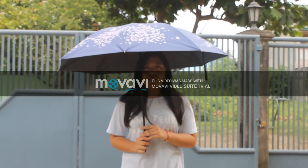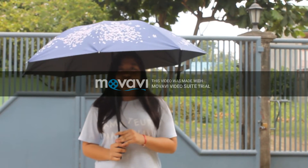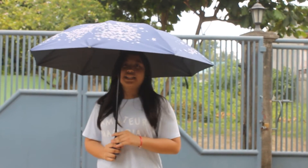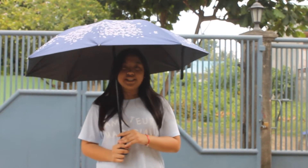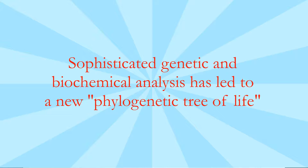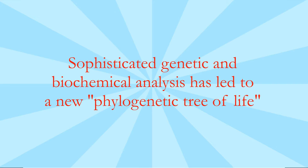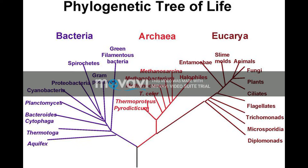These unique cells are thought to be modern descendants of ancient lineages that developed their own rich evolutionary history. Sophisticated genetic and biochemical analysis has led to a new phylogenetic tree of life, which makes use of the concept of domains to describe divisions of life that are bigger and more basic than that of the kingdom.